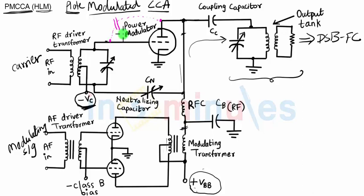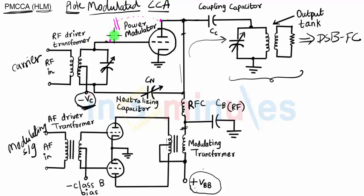At high frequencies, the junction capacitor will start offering low impedance, and hence there will exist a low-impedance path between the two terminals of the device. This capacitor provides a low-impedance path between grid and plate — the grid acts as the input terminal and the plate as the output terminal — giving rise to a feedback path. If this feedback is positive feedback, the amplifier will start oscillating, meaning the output will simply be oscillations not in proportion to the input signal, and the entire circuit will become unstable.